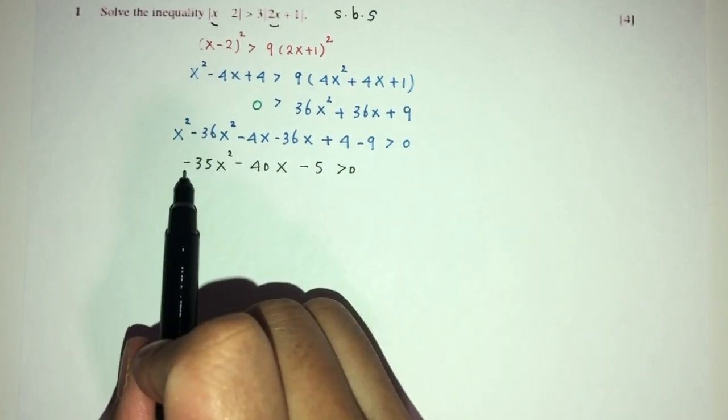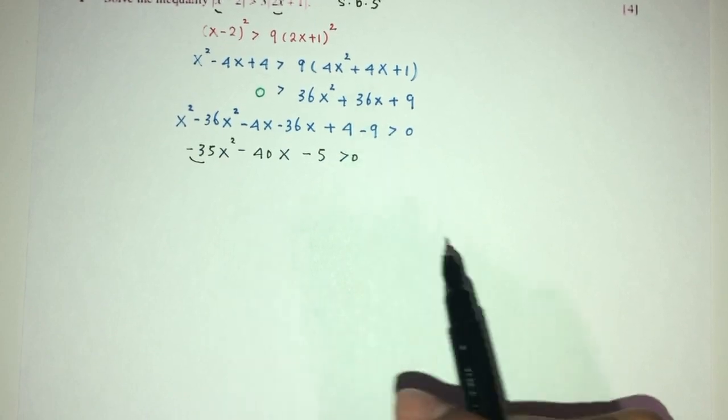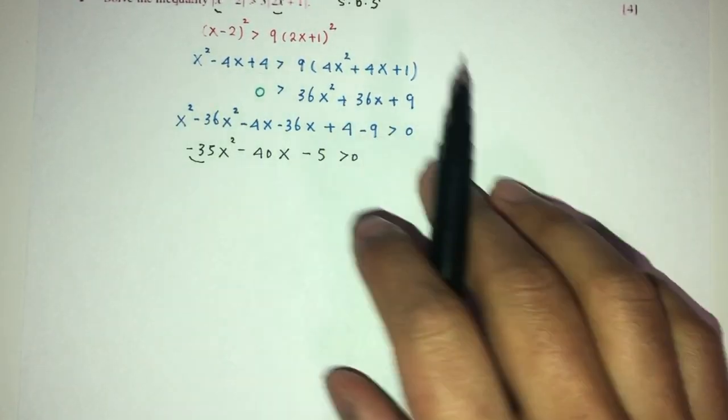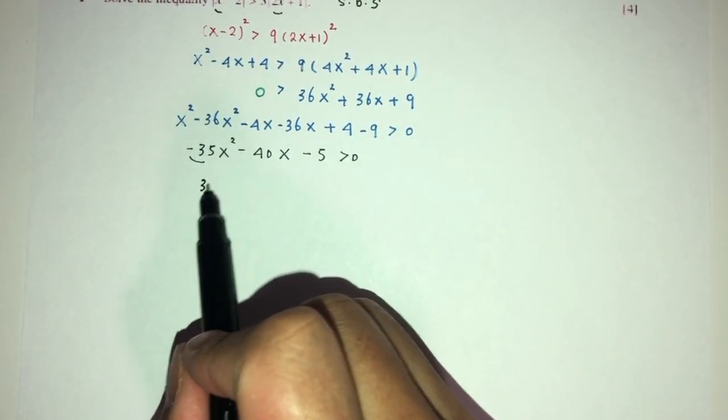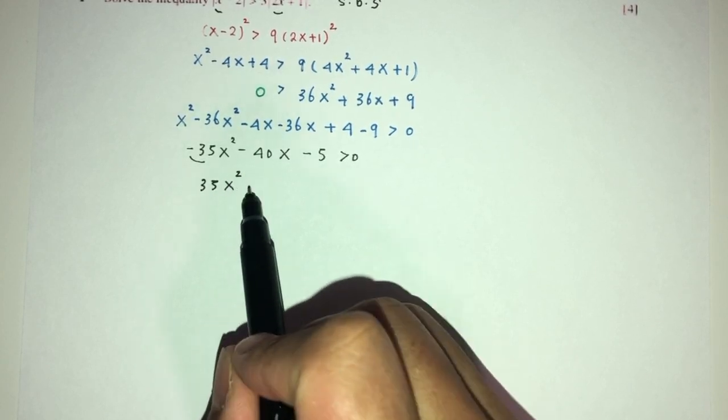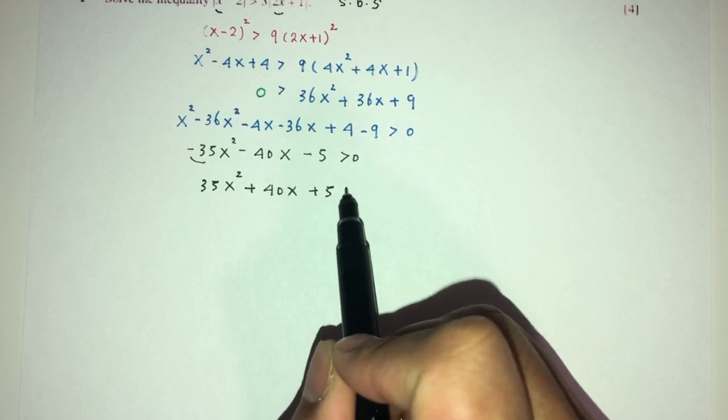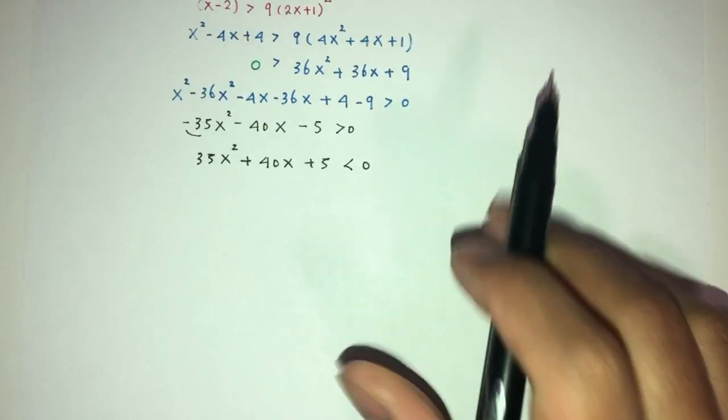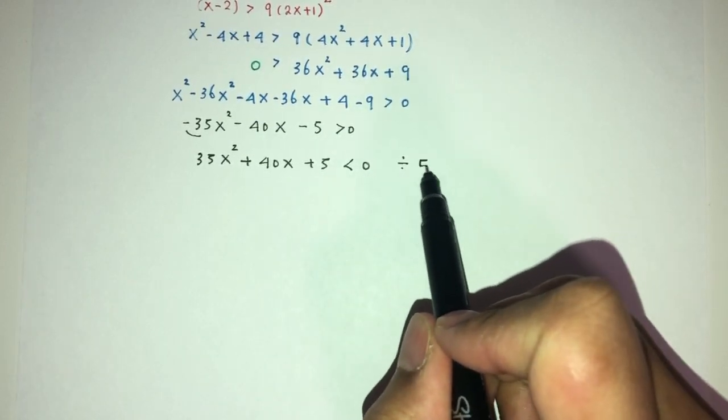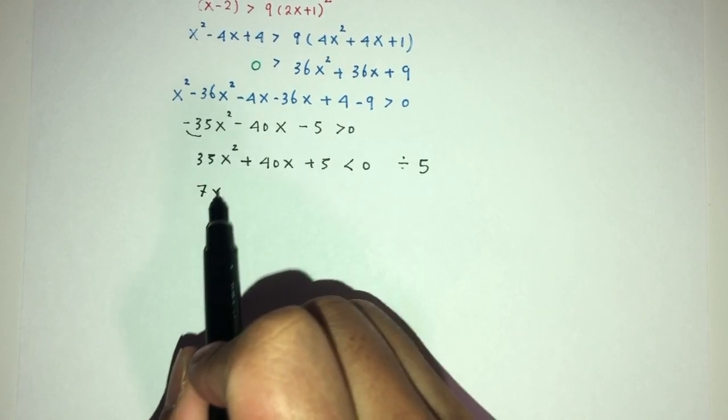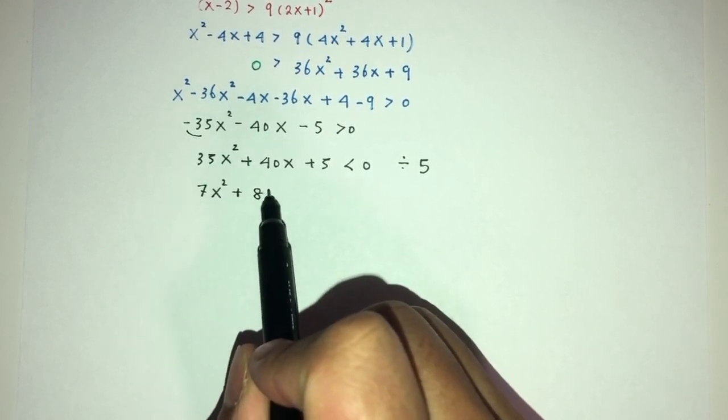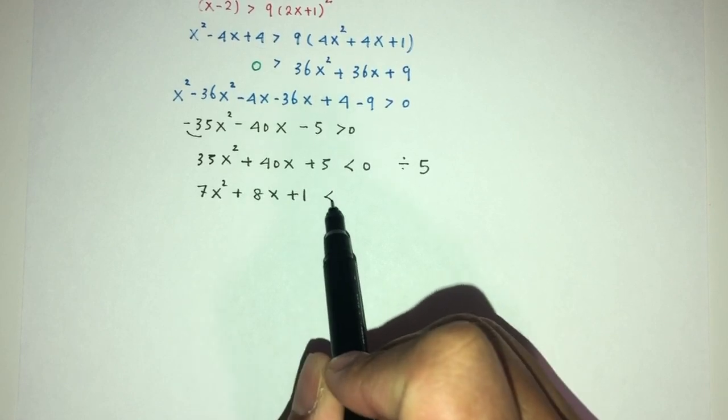Now, this is negative. We can try to make this become positive by sending this to the other side. You will have 35x² + 40x + 5 is less than 0. Divide by 5 for everyone. You will have 7x² + 8x + 1 less than 0.